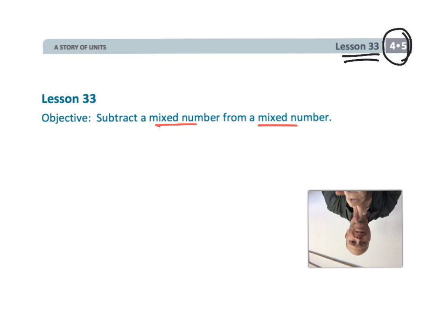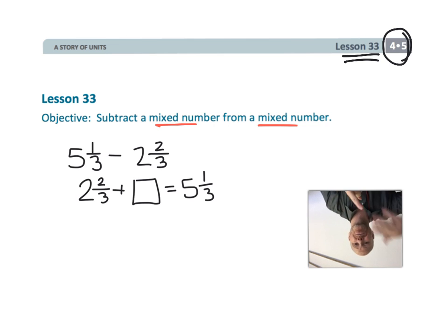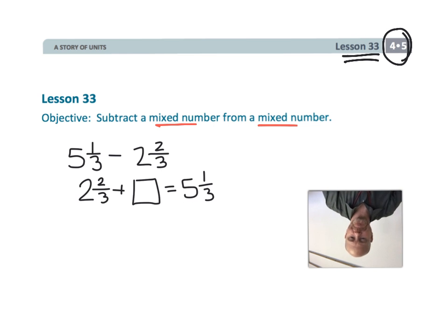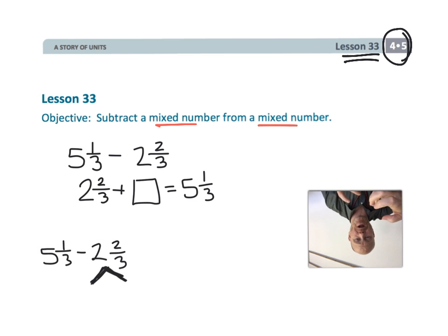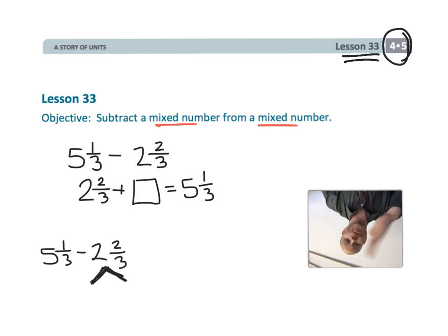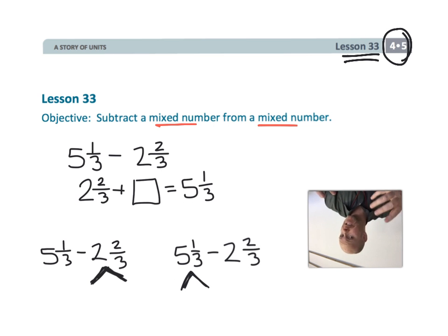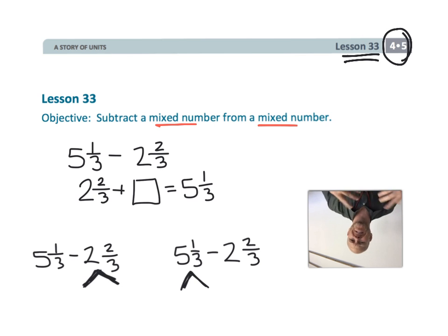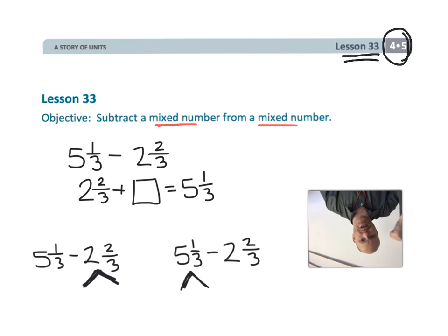The first technique is turning that subtraction problem into an addition problem and solving it through addition. The second method is decomposing the second number — specifically the fraction being subtracted — strategically in order to get the answer. And then the third method is decomposing the first number strategically in order to get the answer. None of these are exactly the standard algorithm; we'll get to that later. So let's get started.